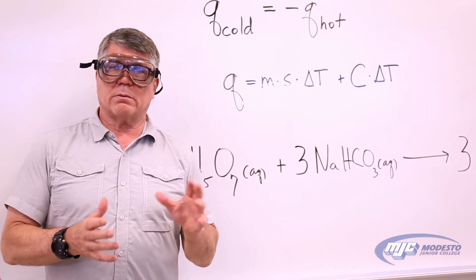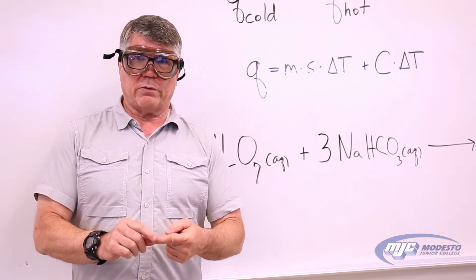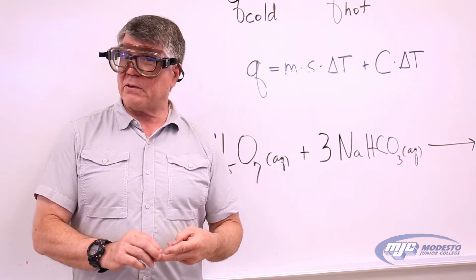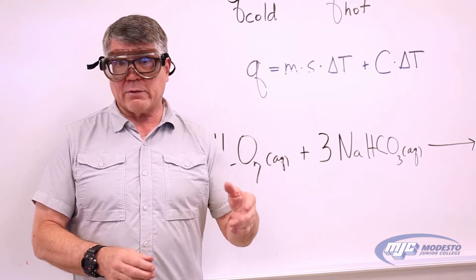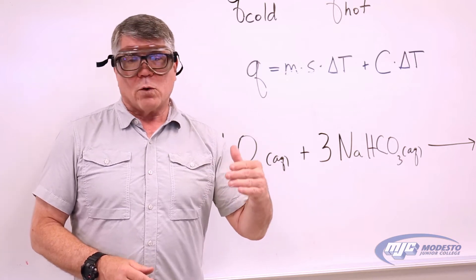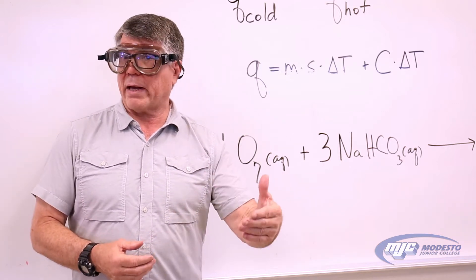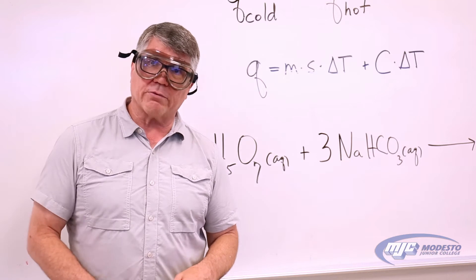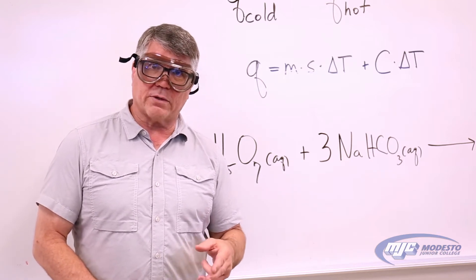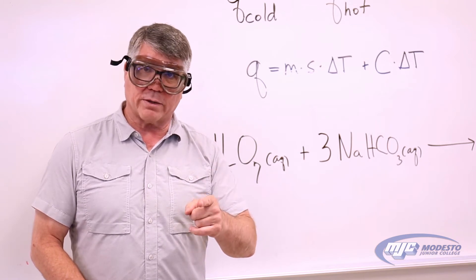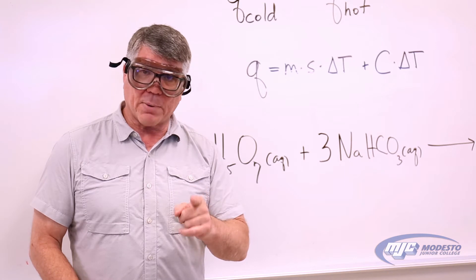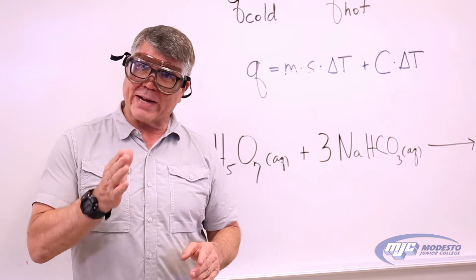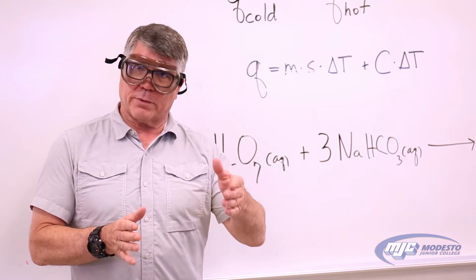This experiment has three basic parts. In the first part, we measure the calorimeter constant. In the second part, we measure the specific heat capacity of an unknown metal — and from that we can calculate its molar mass to identify it. In the third part, we measure the heat of solution of citric acid monohydrate, the heat of solution of sodium bicarbonate, and then the heat of reaction between citric acid monohydrate and sodium bicarbonate.